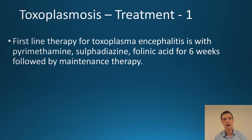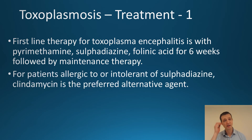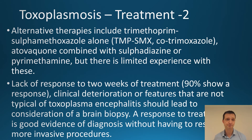In terms of treatment, first-line treatment for Toxoplasma encephalitis is pyrimethamine, sulfadiazine, and folic acid for six weeks followed by maintenance therapy. For patients allergic or intolerant of sulfadiazine, clindamycin is the preferred alternative. Alternative therapies include trimethoprim-sulfamethoxazole, also known as cotrimoxazole or Septrin.